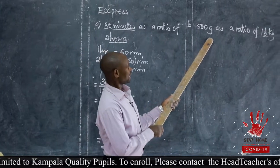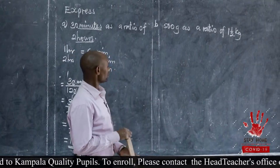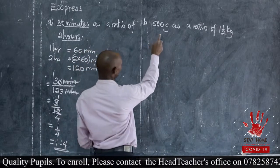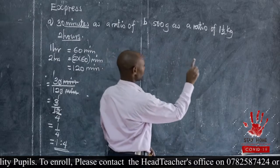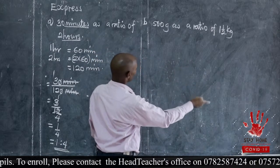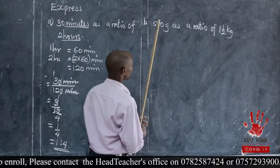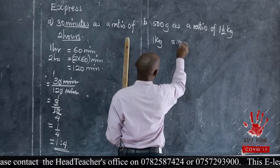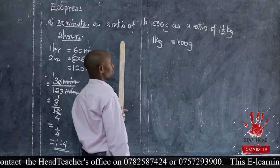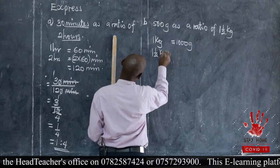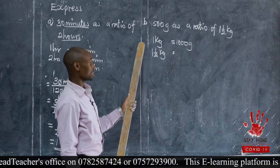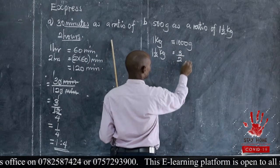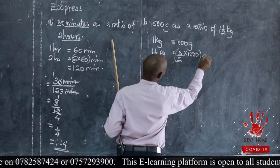We can also look at grams against kilograms. We are going to express 500 grams as a ratio of one and a half kilograms. Changing kilograms to grams is simpler. One kilogram equals 1,000 grams. For one and a half kilograms, change it into an improper fraction: two times one is two, plus one is three over two. Then multiply by 1,000 grams.